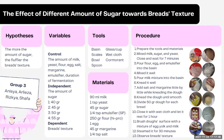The first variable is the control variable, which consists of the amount of milk, yeast, flour, egg, salt, margarine, emulsifier, and the duration of fermentation. The independent variable is the amount of sugar itself — 40 grams, 45 grams, 50 grams, and 55 grams. The dependent variable is the bread's texture.